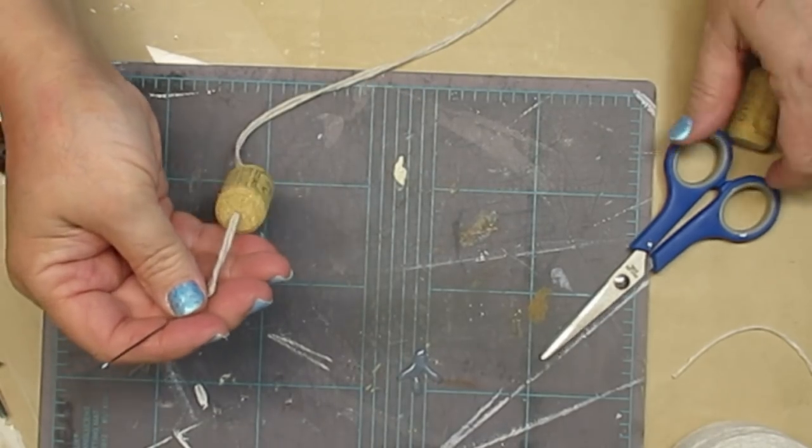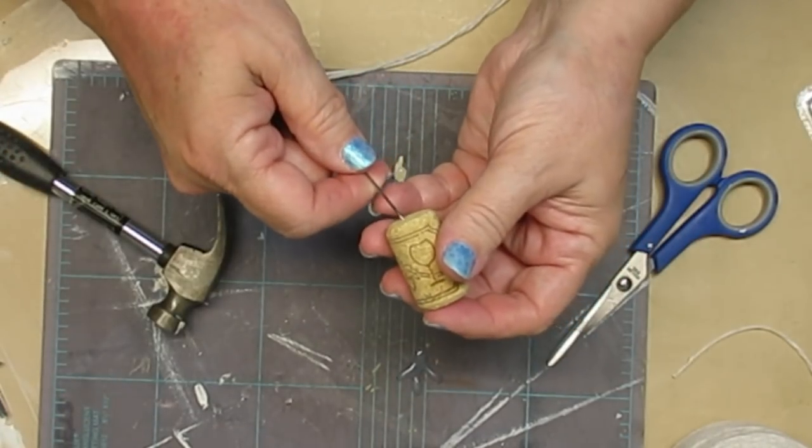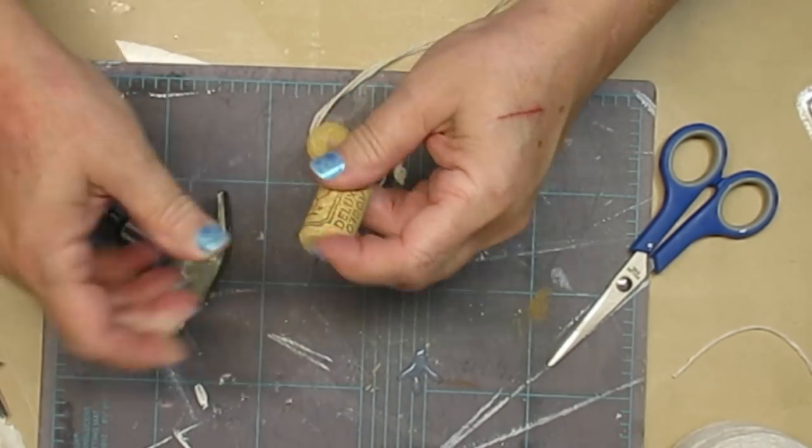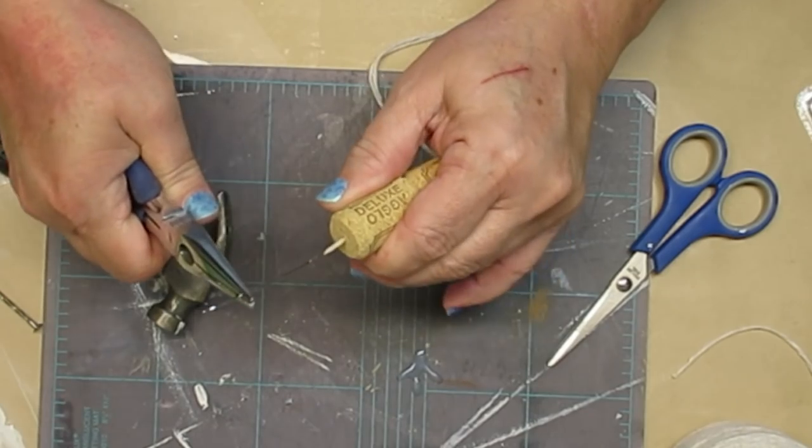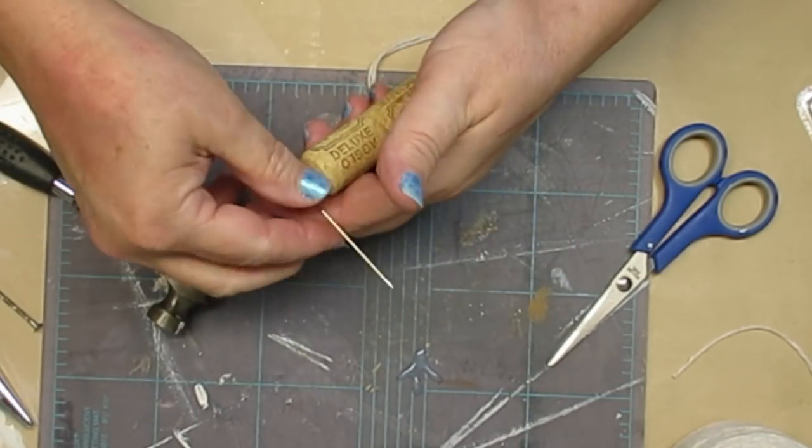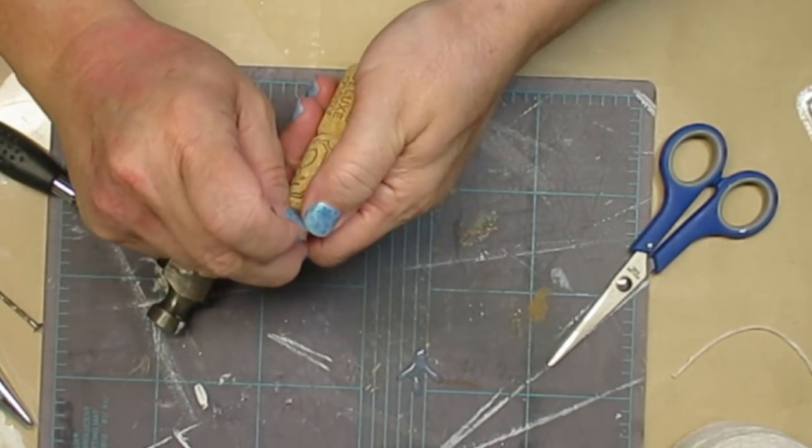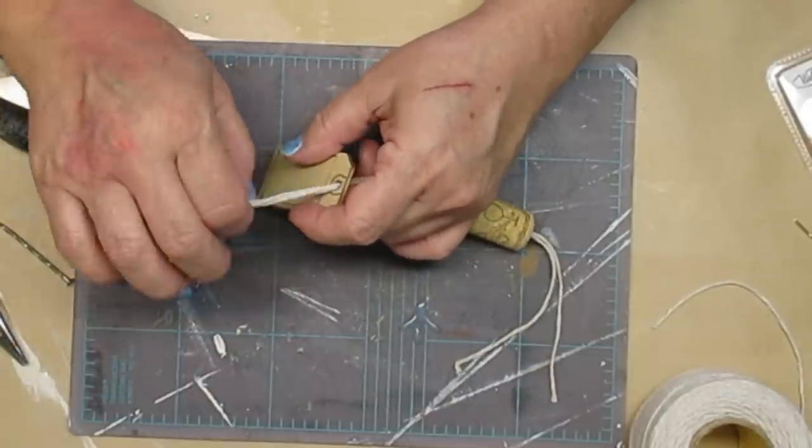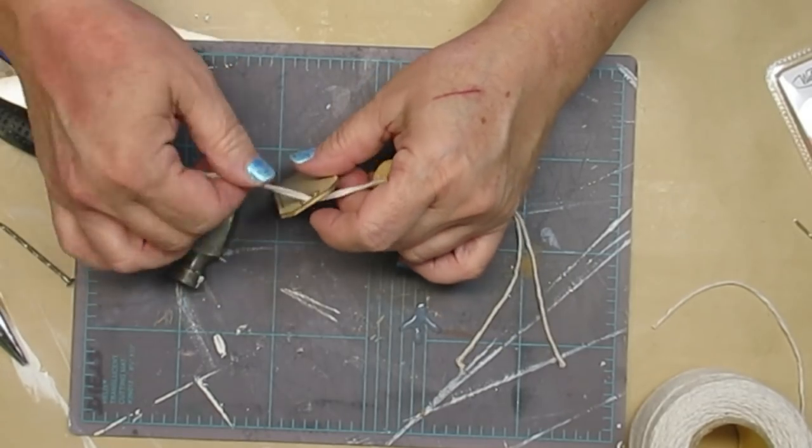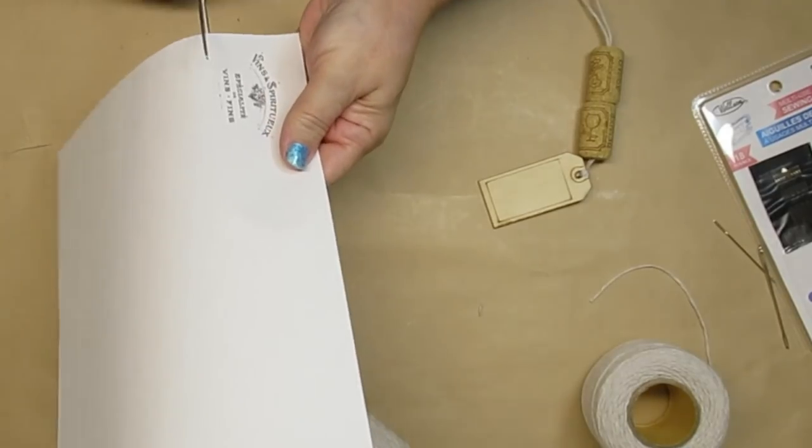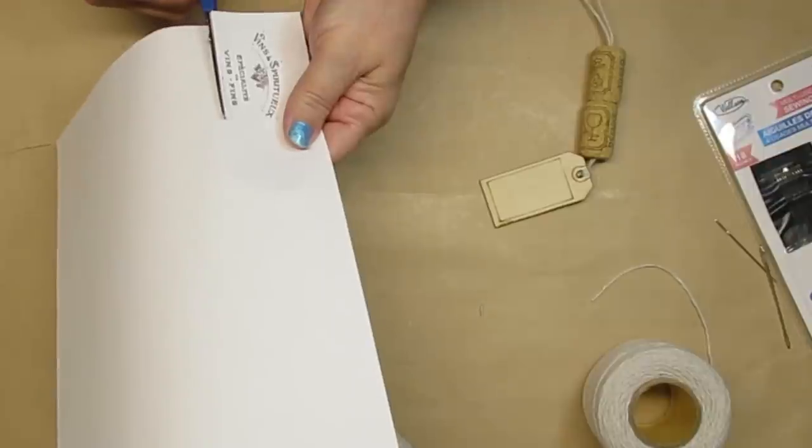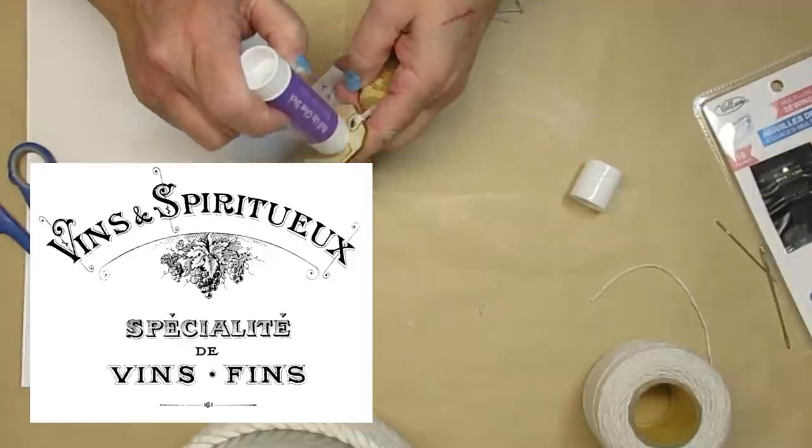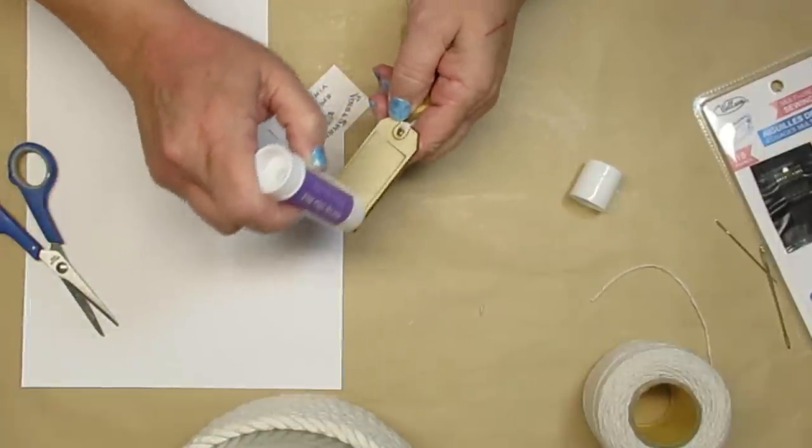So I threaded the needle through the first cork with a double strand of the twine. And you saw there I had to use my pliers to just kind of pull it through because it's a little bit thicker where the twine starts. So you do need a little bit of something extra to give you some force to pull that out. I'm going to tie on one of these little wooden tags that came in a bunch from the Dollar Tree. And then I'm going to add a pretty little vintage French farmhouse wine label. I got this one from the Graphics Ferry.